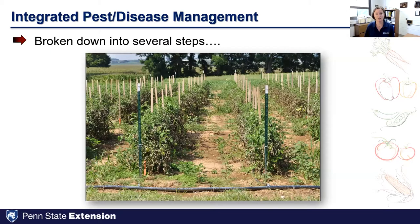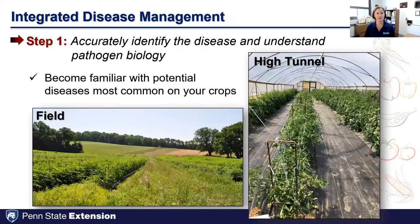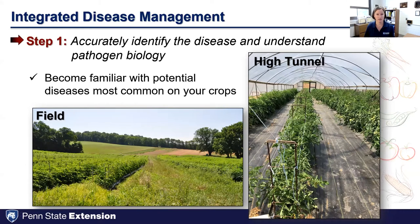I tend to think about integrated disease management in terms of several different steps. The first step is accurately identifying the disease and understanding pathogen biology. If we don't know what diseases we're anticipating, or can't identify what's causing issues in our fields, then it becomes really hard to make management decisions in season, as well as thinking about future steps to reduce those diseases.